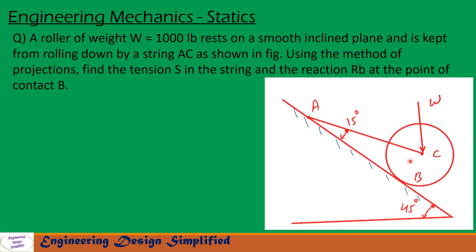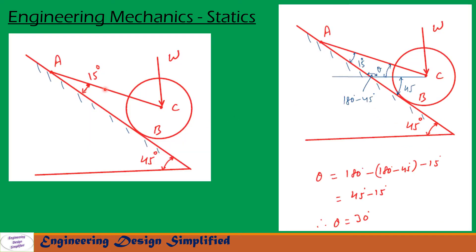Now let us see in the coming slides how to solve this problem. This picture is redrawn here. Weight W is acting downwards and the string is at an angle of 15 degrees from the inclined plane. Let us draw a horizontal line passing through the center of the roller. The angle from the horizontal to the inclined plane is 45 degrees.